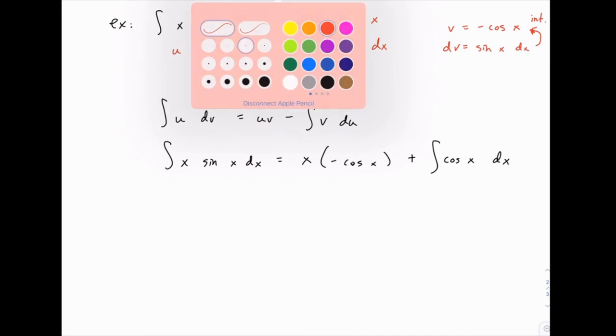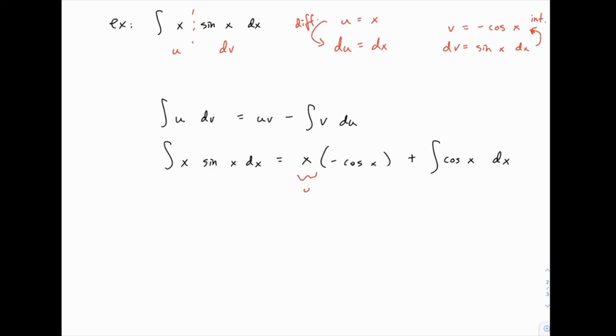So just to make this really clear we've got u, dv, v, and du. And notice that the negative sign here turned into a positive because v was negative cosine of x.